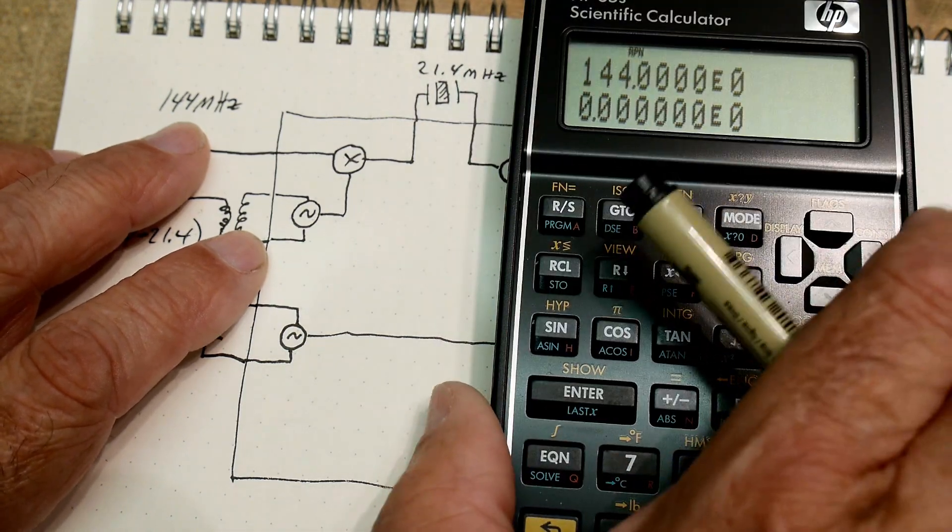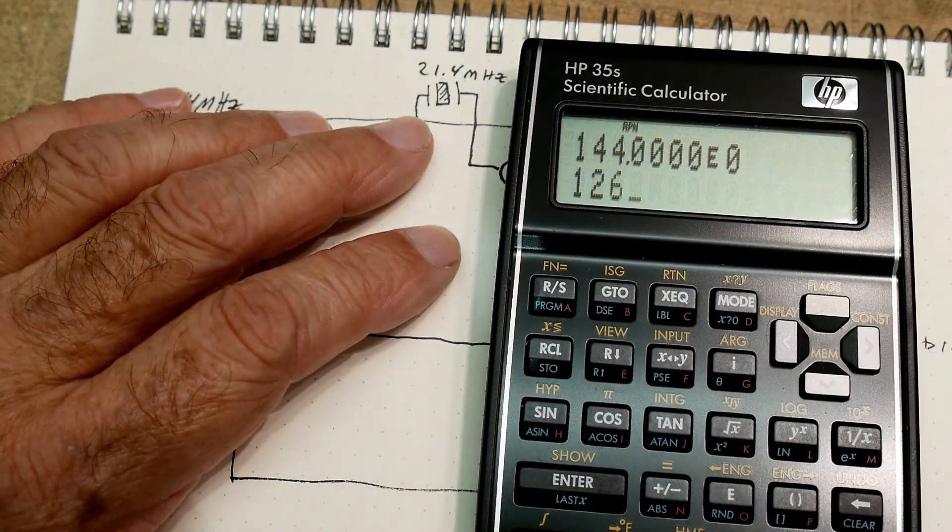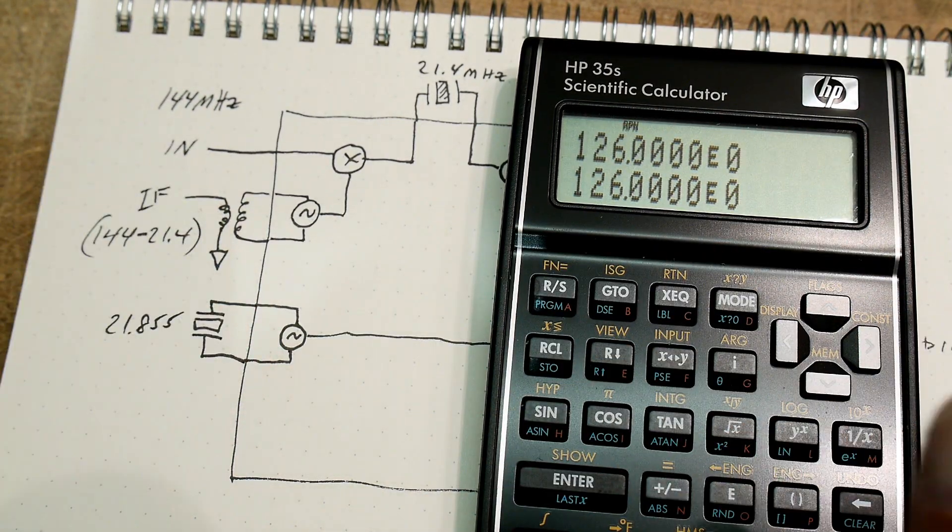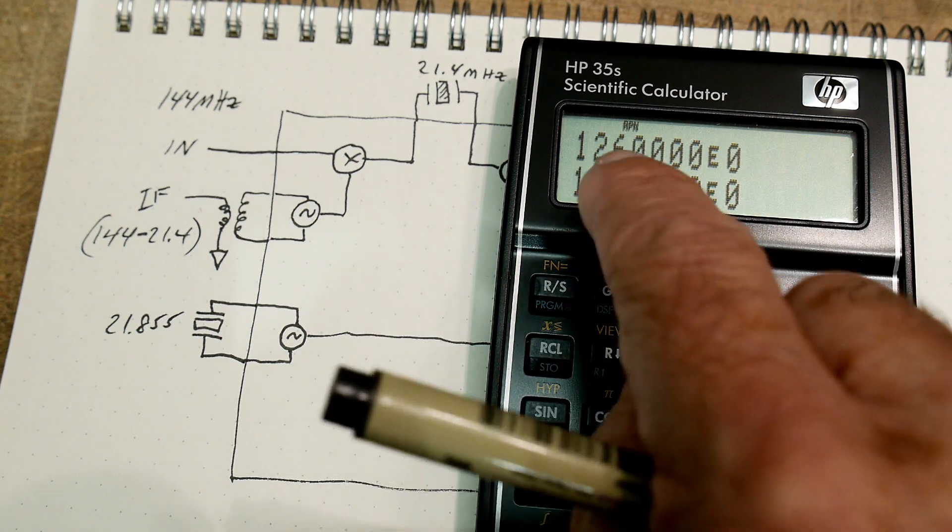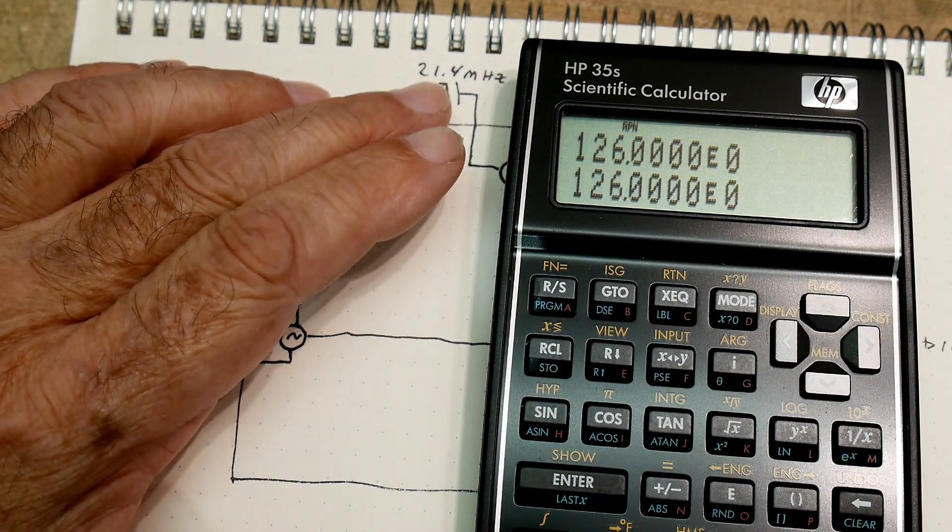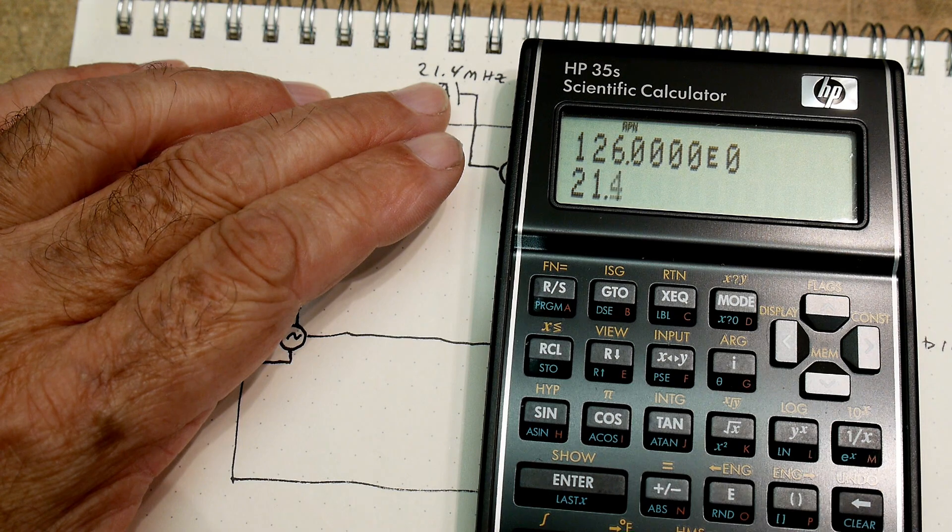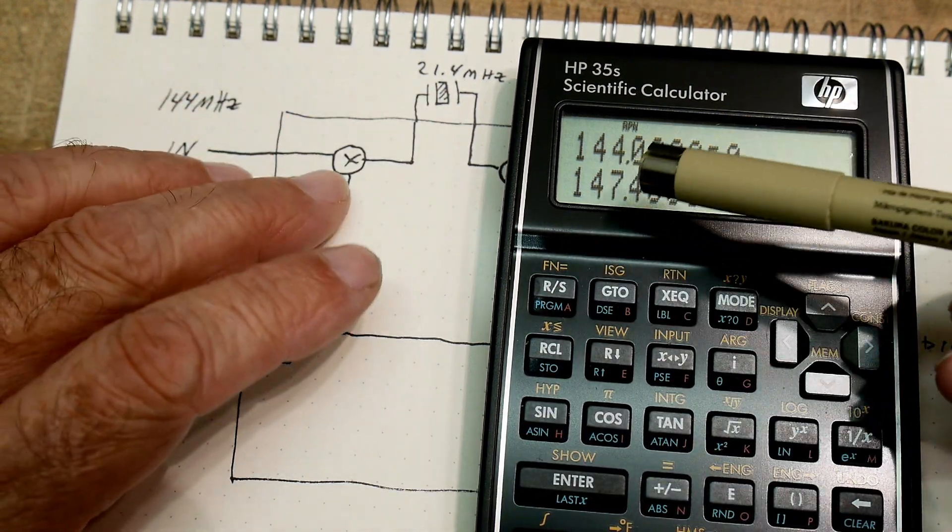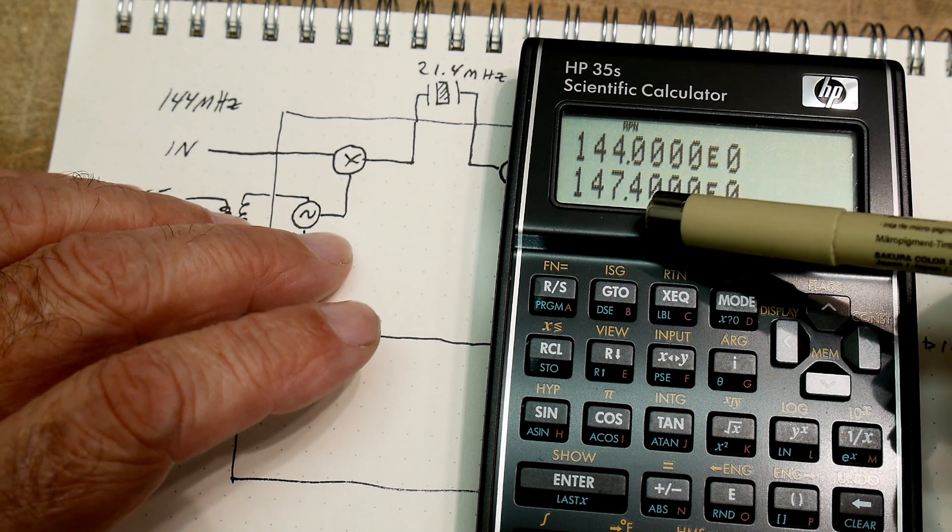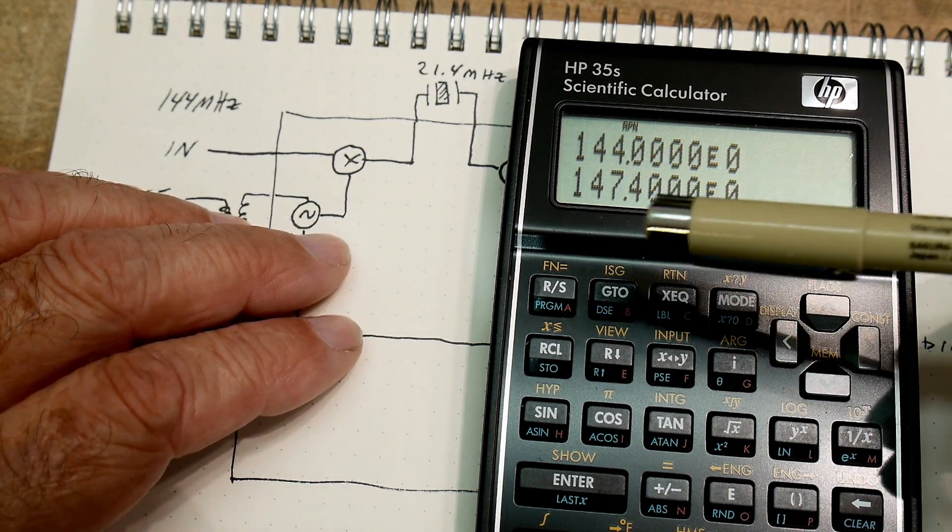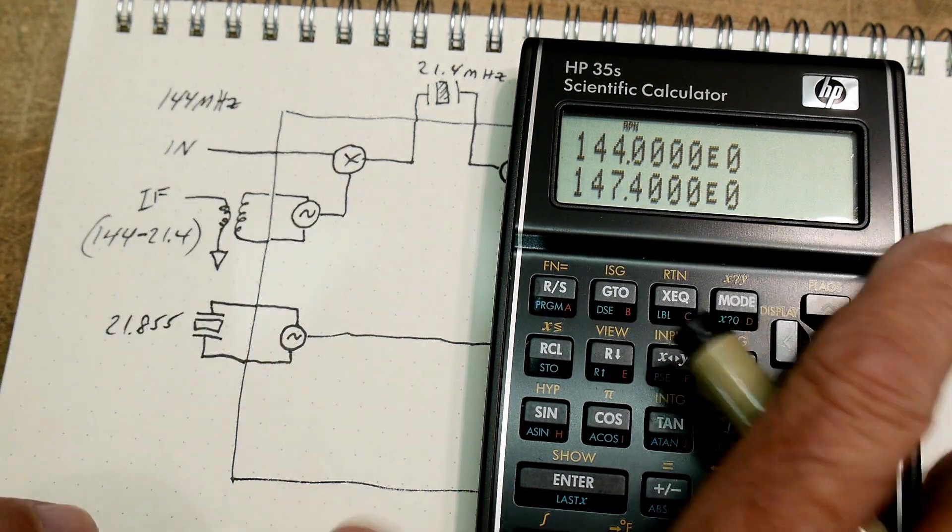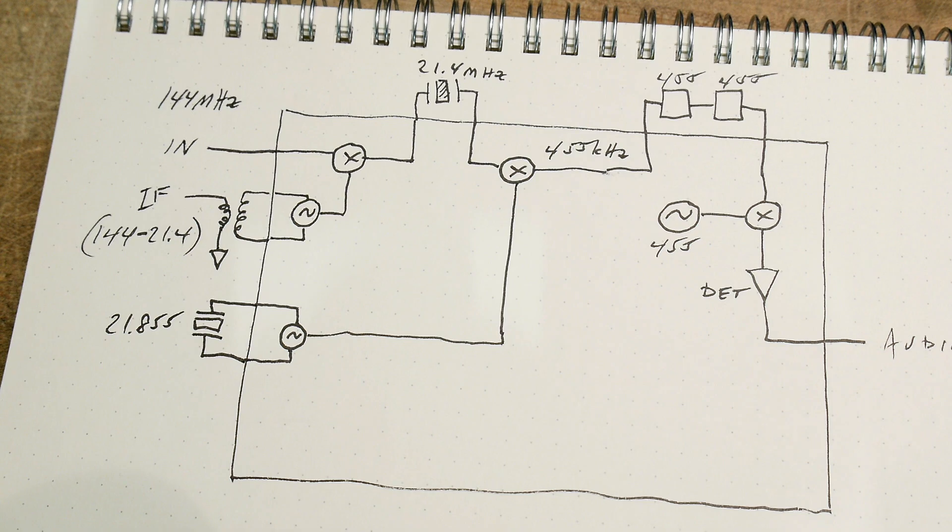Let's say that our phase lock loop was running at 126. If we add 21.4 to that, then the actual input it's listening to is 147.4. And so that is what 126 megahertz IF would be. Hope that makes it clear.